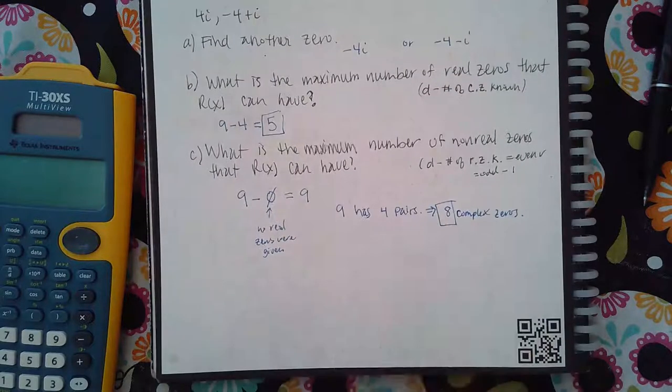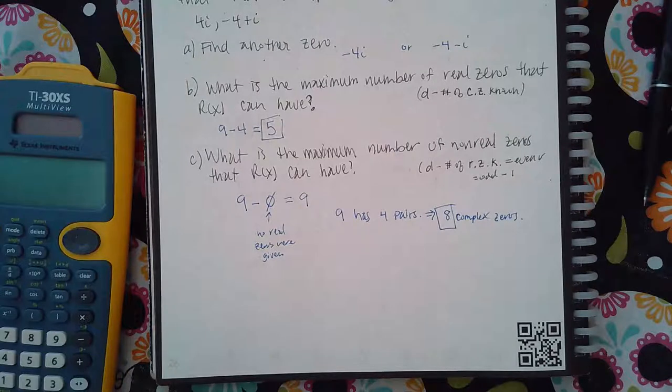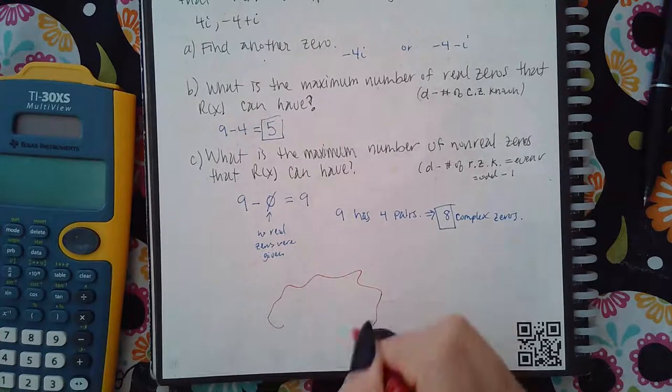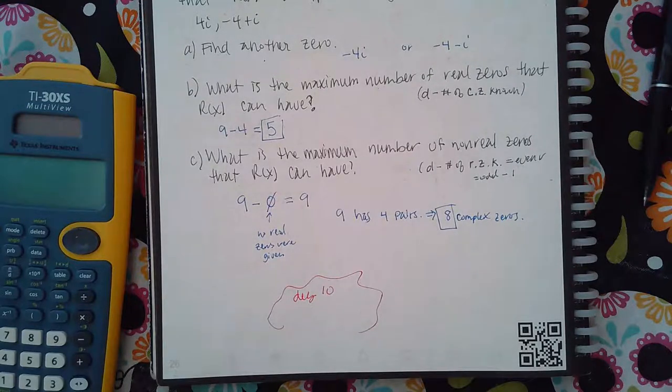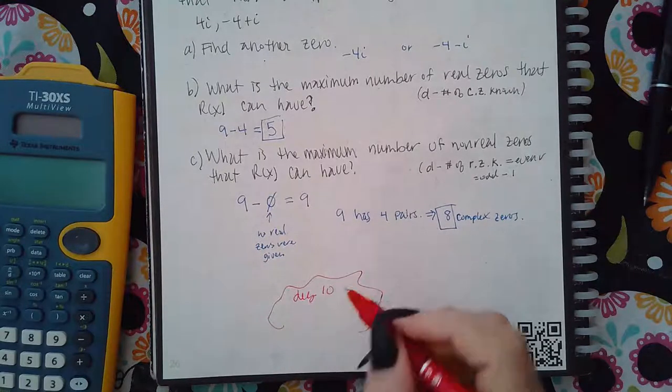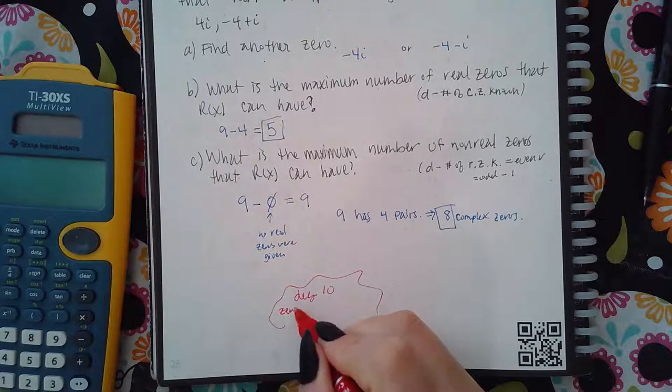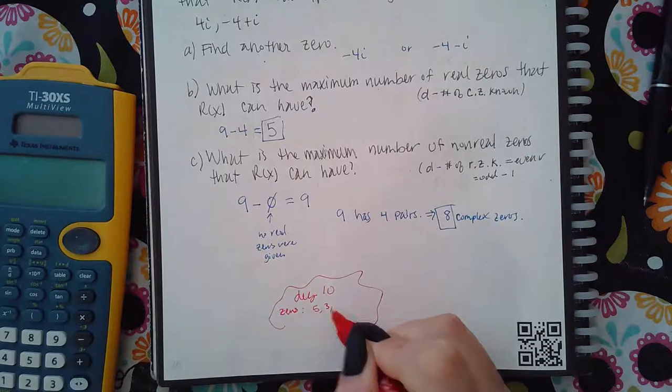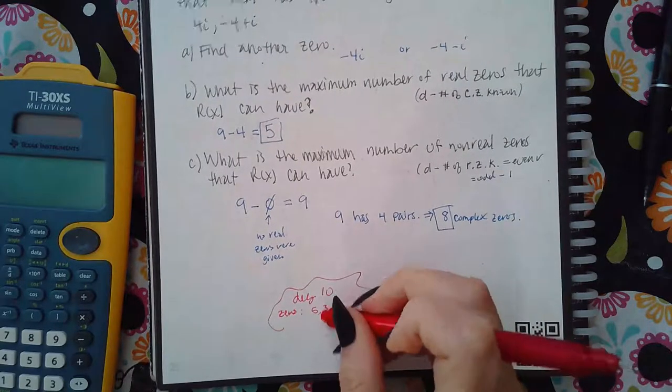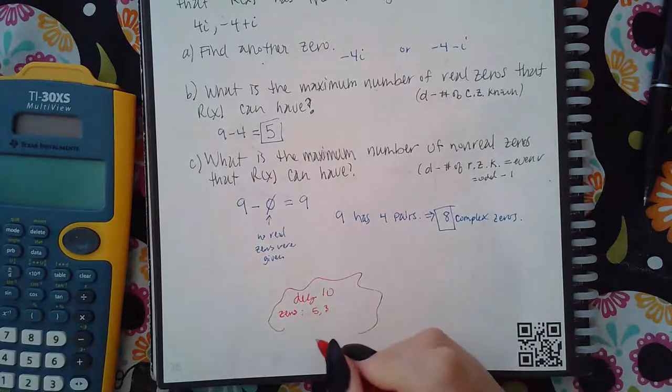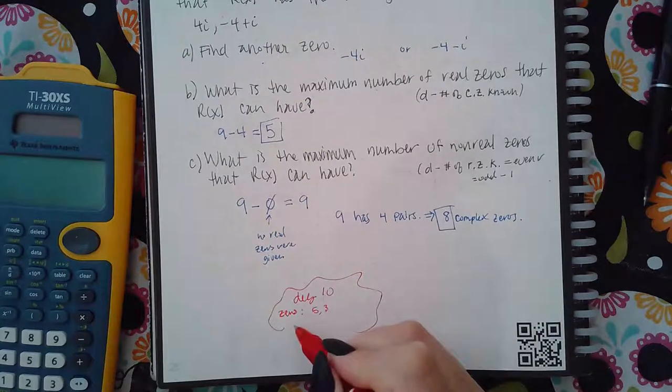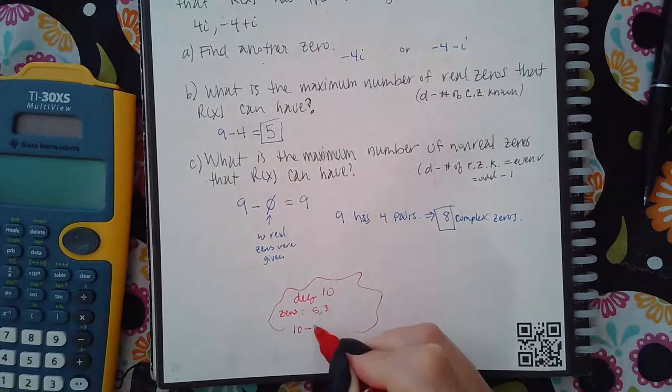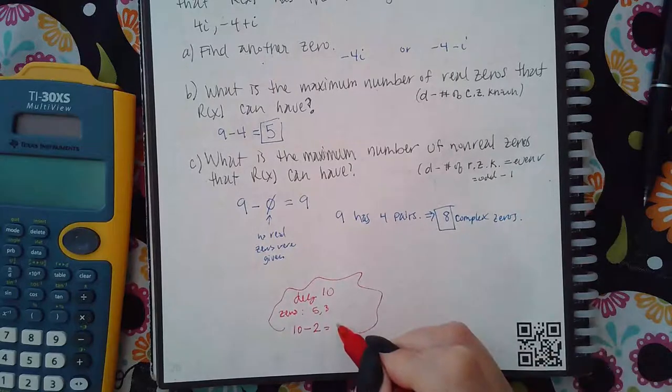Let's pretend that the problem was different. Let's say the problem had degree 10, and I was given two real zeros: 5 and 3. Then when I go to figure out the maximum number of non-real zeros, I would take that degree minus the two real zeros that they gave me and get 8.